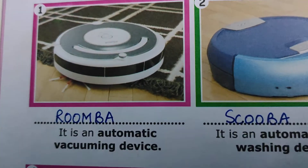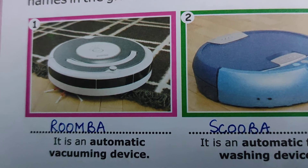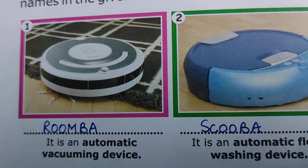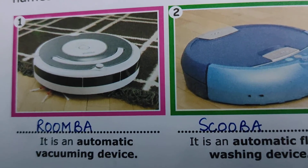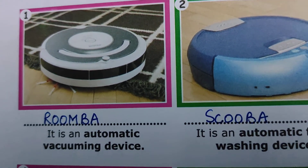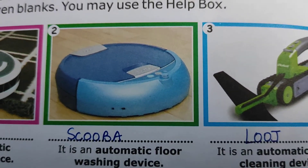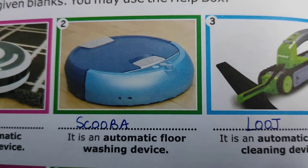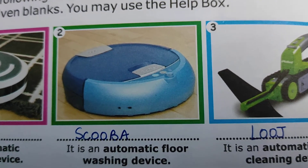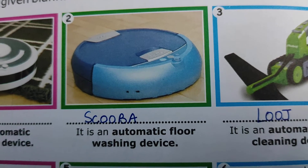The first one you can see in the picture is an automatic vacuuming device — a sort of vacuum cleaner. The name of this robot is Roomba. Coming on to the second one, this is an automatic floor washing device that helps in washing the floor, and its name is Scuba.